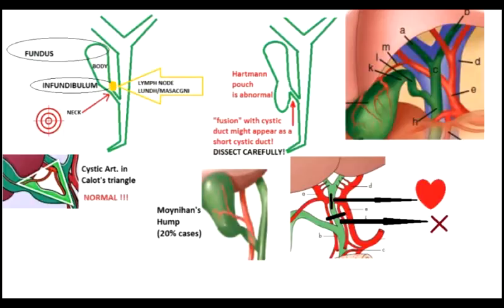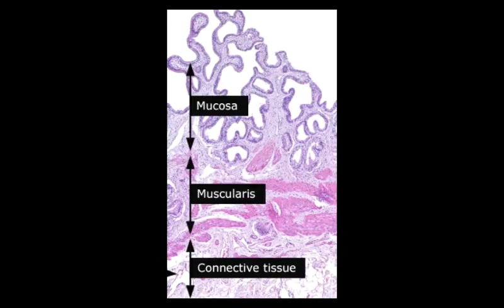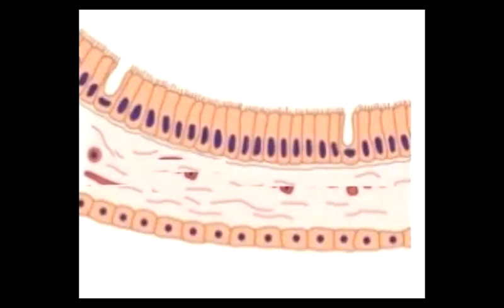The next step would be to dissect very close to the gallbladder to find the cystic artery branching out of the right hepatic artery. It should then be clipped. Unlike the rest of the gastrointestinal tract, the gallbladder has no sub-mucosa. The muscularis is criss-cross. Thus, the mucosa is plastered to the serosa in the diamond-shaped spaces in the criss-cross.